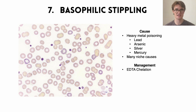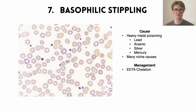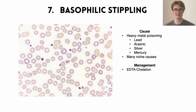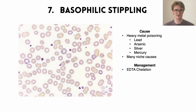There are many additional niche causes of basophilic stippling, but in exams and clinical practice the main one is heavy metal poisoning. When we have heavy metal poisoning, we want to remove those heavy metals from the body. The main way we do that is with chelation — we give a drug called calcium EDTA, which goes into the blood, sequesters the heavy metals, and allows the body to remove them much more easily through the kidney.